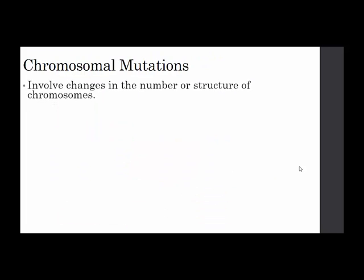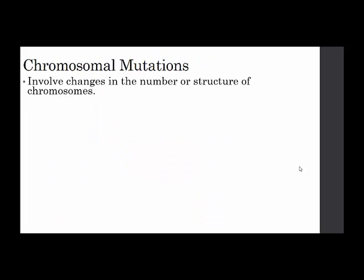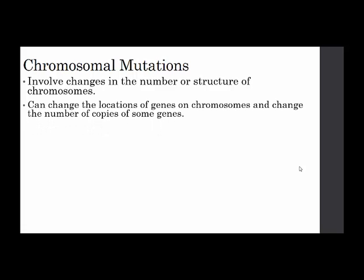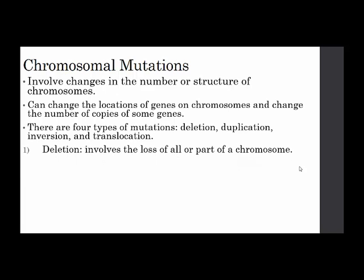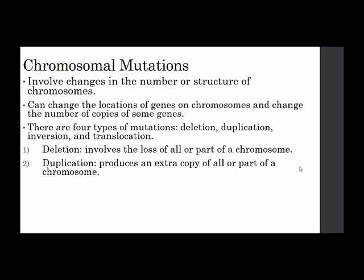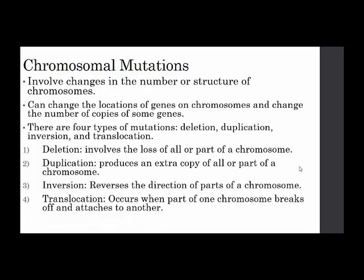Now let's talk about chromosomal mutations. They involve changes in the number or structure of chromosomes, can change the locations of genes on chromosomes, and change the number of copies of some genes. There are four types: deletion — loss of all or part of a chromosome; duplication — produces an extra copy; inversion — reverses the direction of parts of a chromosome; and translocation — when part of one chromosome breaks off and attaches to another.